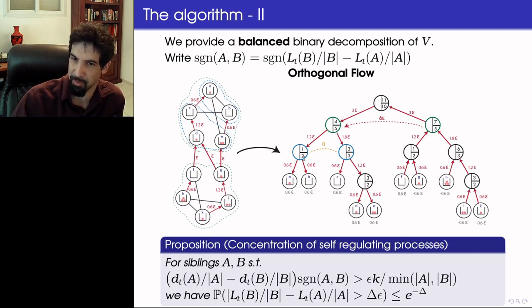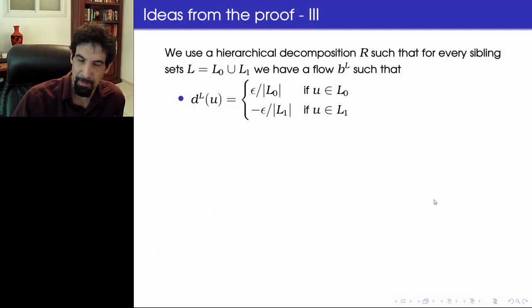Then the relative drifts of every two sibling sets in each of the subtrees will not be modified. So our plan is to try and realize orthogonal flows of this type for every pair of sibling sets and superimpose them. Let's make this more precise. Using a hierarchical decomposition R.